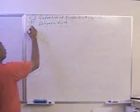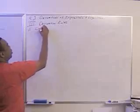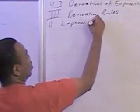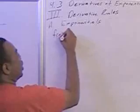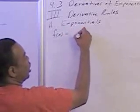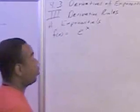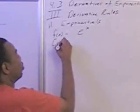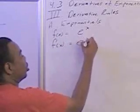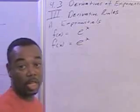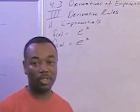Let's take a look at the derivative rules. First, for the exponentials. If f of x equals e to the x, the derivative of this will always be e to the x again. That's one of the nicest derivatives — the derivative of e to the x is e to the x.